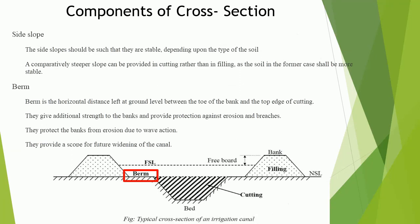Components of canal cross section: side slope — the side slopes should be stable depending upon the type of soil. A comparatively steeper slope can be provided in cutting rather than in filling, as the soil in cutting is more stable. Berm — the horizontal distance left at ground level between the toe of the bank and the top edge of cutting. Berms give additional strength to the banks and provide protection against erosion and breaches. They also protect banks from wave action and provide scope for future widening of the canal.